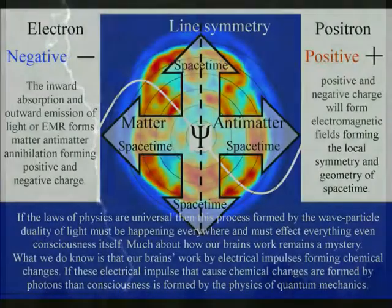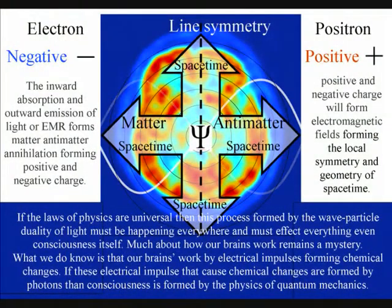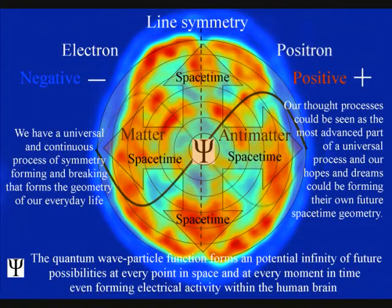The most advanced part of this universal process is in the form of electrical activity in the brain, being able to comprehend and measure this process as the flow of time with a past and uncertain future.